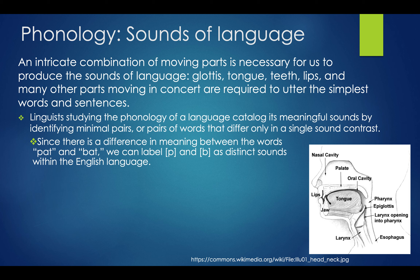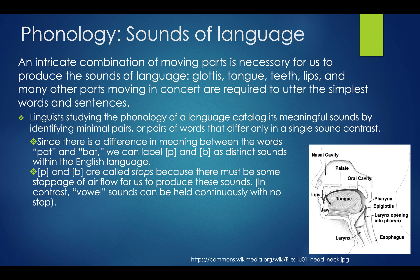Other examples include cup and cap, or bit and butt. The contrasting sound doesn't have to be the starting sound or the vowel sound — it can be any component of the sounds strung together in those words. P and B are called stops because there has to be a stoppage of airflow to make these sounds. Vowel sounds can be held continuously — there's no stop. To make P or B, you have to physically restrict the air movement to develop that meaningful difference.